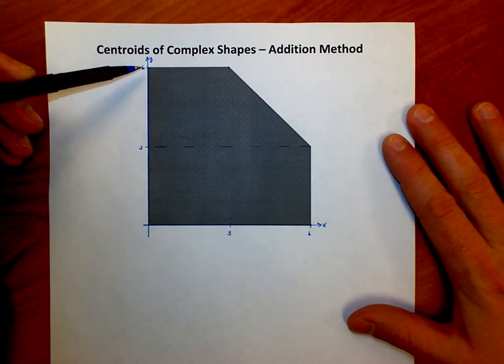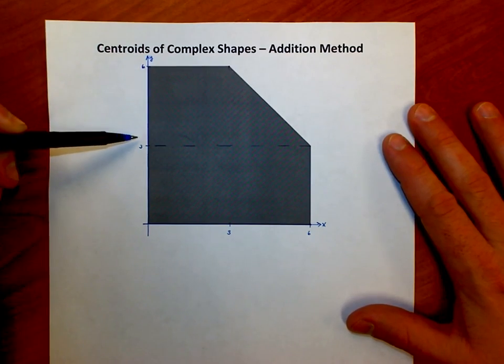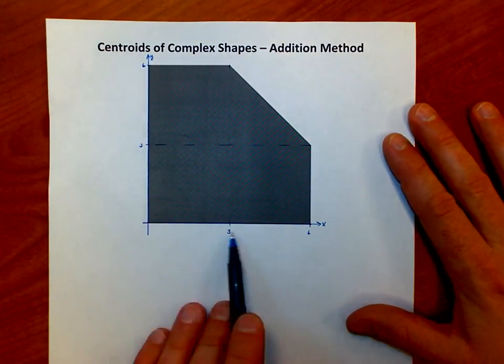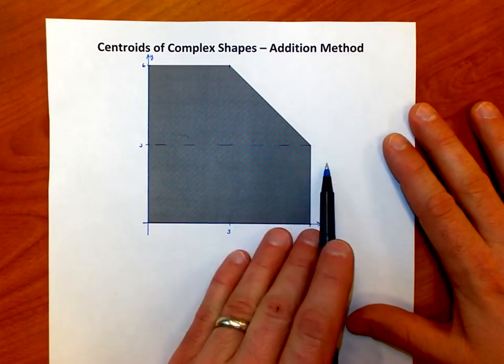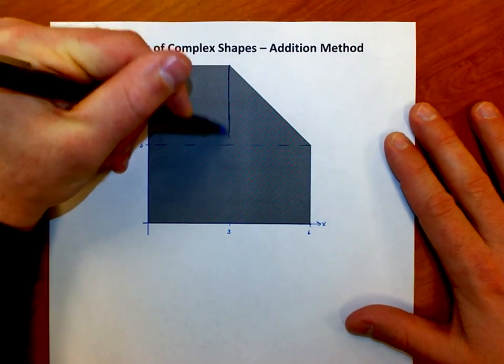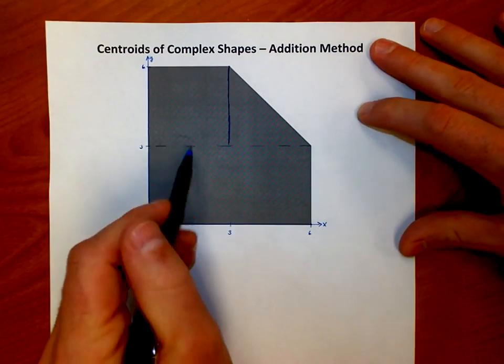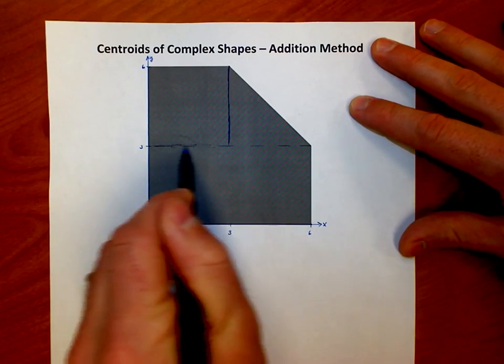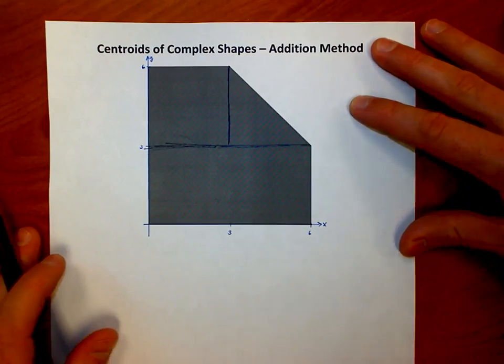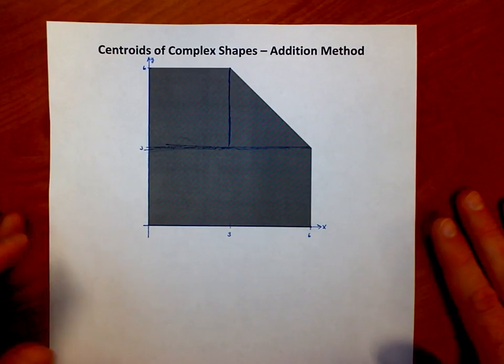We have here a shape that is six units tall. At the three unit mark is whenever this bend starts. And then it's six units wide and at the three unit mark is when the bend starts this direction. So let's break this up. If I look at it, not as a complex shape, but as a rectangle and a square and a triangle.